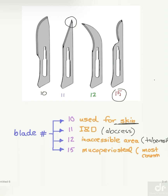You have to differentiate between blade number 15 and blade number 10. In the case of blade number 15, the cutting edge is smaller in comparison with blade number 10, which is bigger. So the difference is quite obvious.